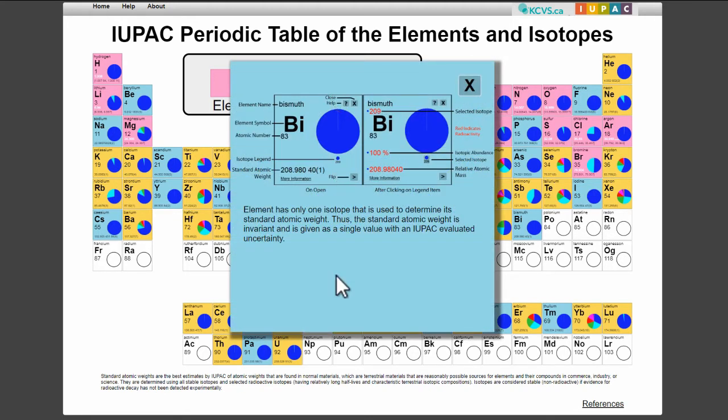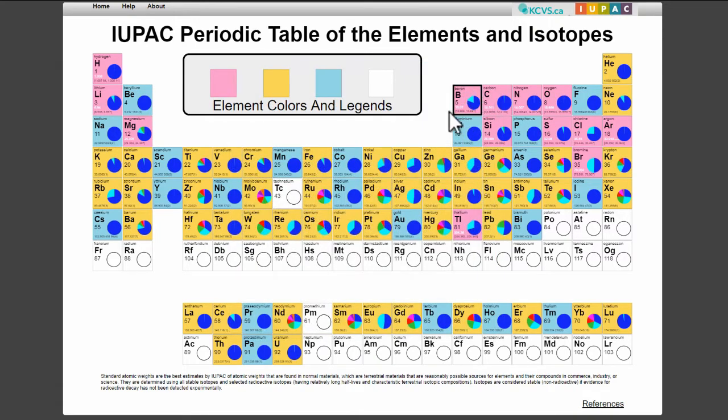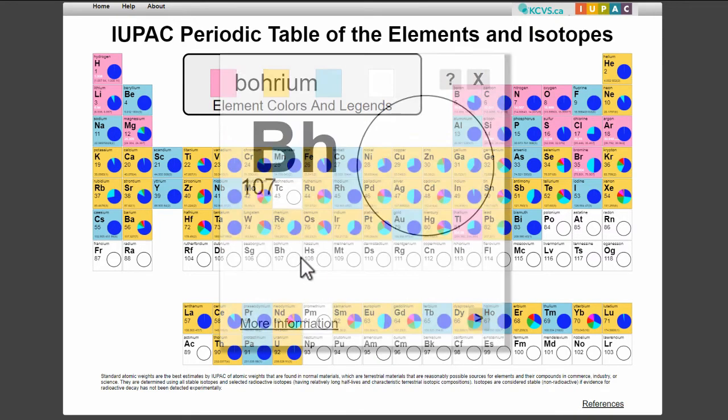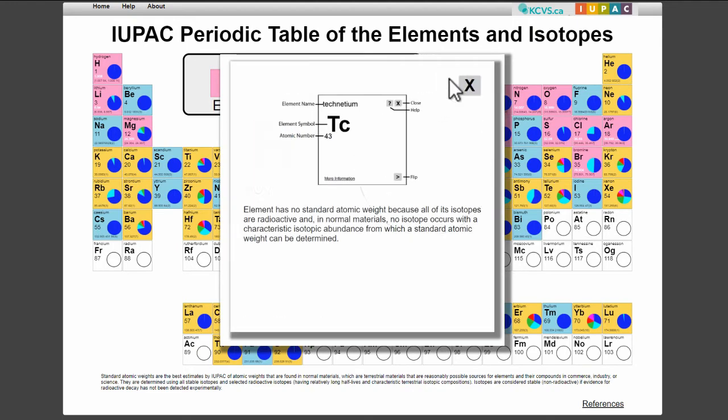For example, blue is the background color for an element if only one isotope is used to determine its standard atomic weight. The standard atomic weight is invariant and is given as a single value with IUPAC-evaluated measurement uncertainty. This information can also be accessed by clicking the question mark button on any element tile.